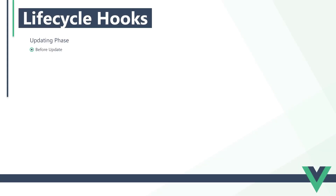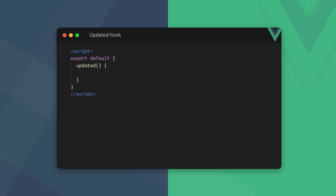After the update is processed, we reach the updated step. This step uses the updated lifecycle hook and is invoked when the update has been processed — in other words, when we see the update on the page. It should be noted that the template doesn't unmount when the user changes data. It's only a re-render, so there's no mounting or unmounting phase.